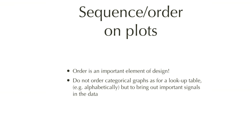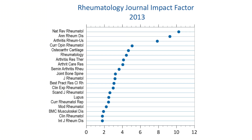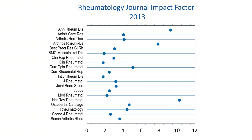Sequence is a very important thing in plots — you have to think about the order in which you present your data. For categorical graphs, you don't label them as you would a telephone book but according to the important signal in your data. For example, this dot plot shows rheumatology journals ranked by impact factor, because impact factor is the important ordering factor — we want to know which journal is on top and which is on the bottom. However, if it is important for readers to look up a specific journal, you would plot the data again in alphabetical order.